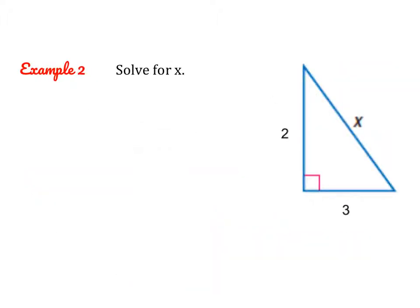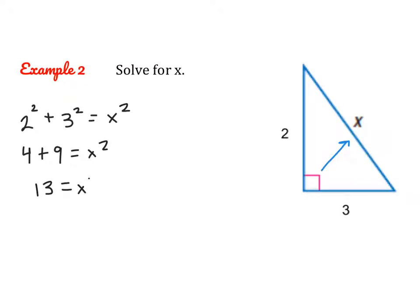We're going to try one more together. In this case, I can see that X is my C value, so we're actually finding the hypotenuse. But it's the same setup: A squared plus B squared equals C squared. Then we just simplify. So 4 plus 9 equals X squared, and 13 equals X squared. So X equals the square root of 13, which cannot be simplified, so we're done.